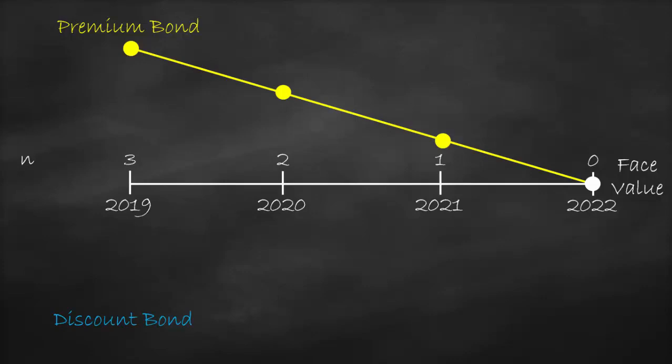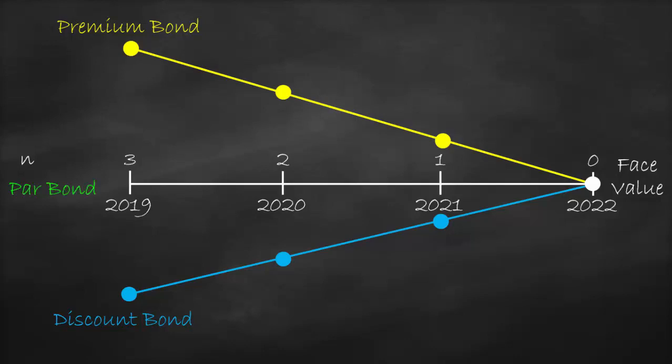For a discount bond, the bond price is below face value. Consequently, the discount bond price will keep increasing until it reaches face value at maturity. For a par bond, the bond price is equal to face value, so the bond price will remain constant every year. We can prove this mathematically with numbers, so let's start with the premium bond.